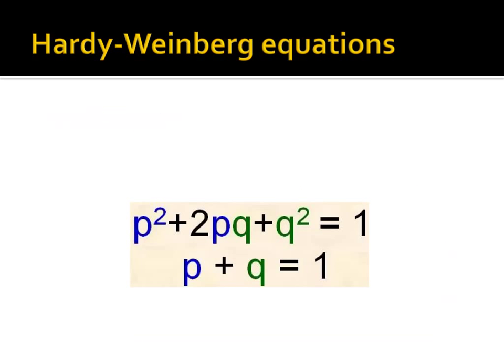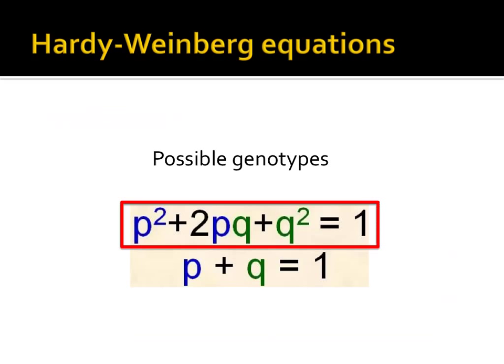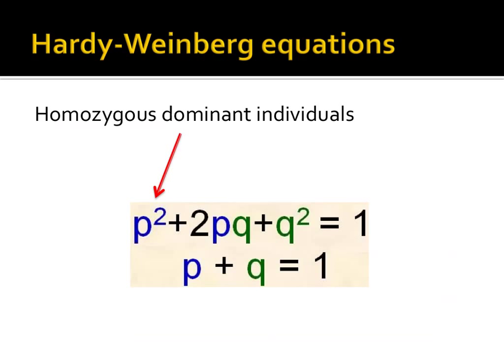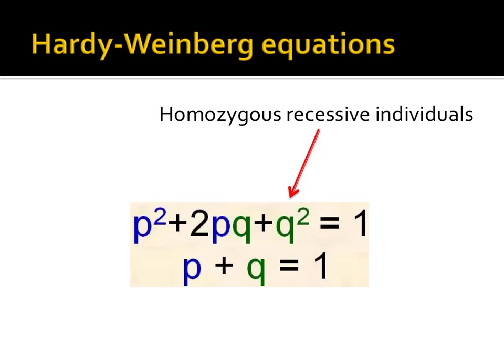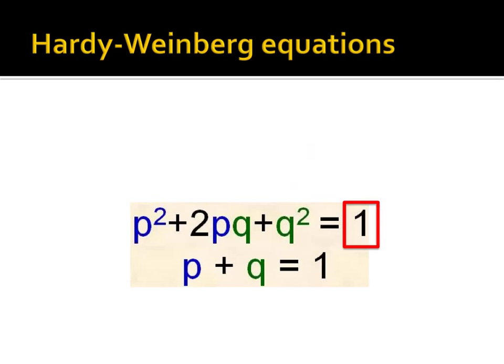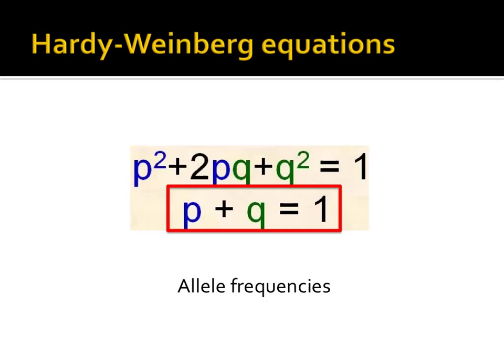Assuming all of the aforementioned conditions are met — which is never the case, as these are an idealized set of conditions — you could use the following two equations to learn more about the genetic or genotypic makeup of a population. The top equation shows three potential genotypes individuals could possess for a particular trait. In this equation, p-squared represents individuals that are homozygous dominant, 2pq represents individuals that are heterozygous, and q-squared represents individuals that are homozygous recessive. Note that all three possibilities together add up to one, or 100%. The bottom equation represents the frequency of different alleles in a population.